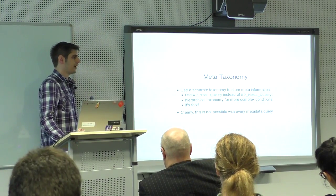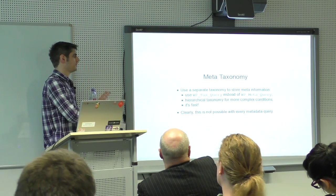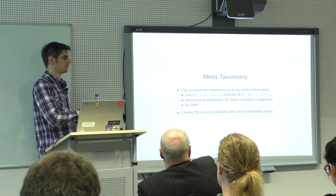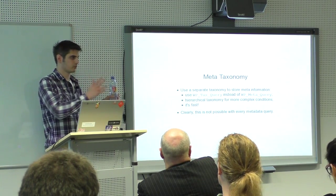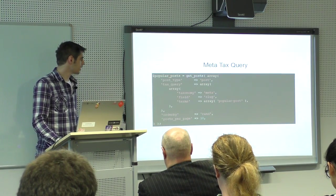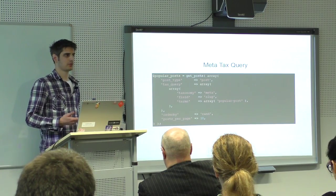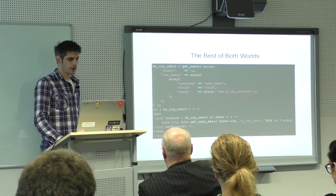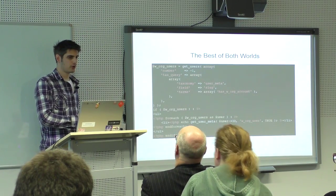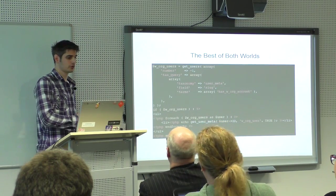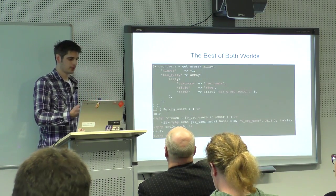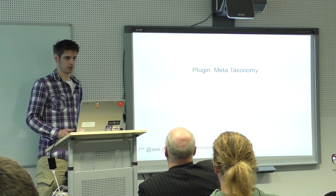This is not possible with every metadata query. If I want to display some extra information on a user profile page, I already have the user ID and the meta key — that's what metadata is designed for. But 'give me all users with whatever value' is not so good. For example: first I do a tax query checking for all users that have a WordPress.org account. If I have those users, I iterate through them and display a user metadata field — using only indexed fields.